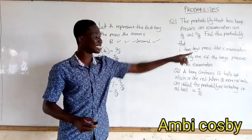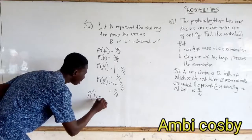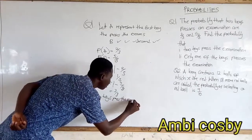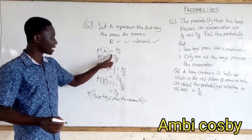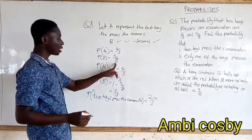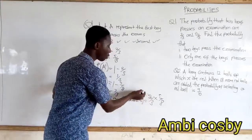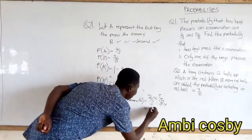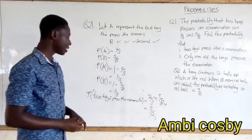Part (i): both boys pass the examination. The probability that both boys pass is equal to the probability that the first boy passes, 2 over 3, multiplied by the probability that the second boy also passes, 5 over 8. Simplifying: 2 goes into itself once, and into 8 four times, giving 1 times 5 over 3 times 4, which is 5 over 12.